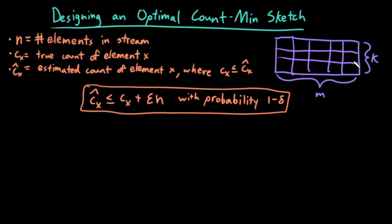The two parameters that we can choose are k, which is the number of rows in our count-min sketch (in other words, the number of hash functions), and m, the number of columns in our count-min sketch. So these are the two parameters that we want to pick. How do we pick these optimally?